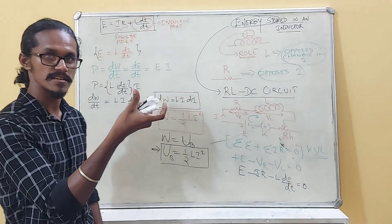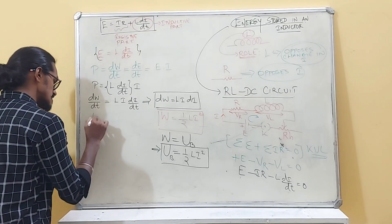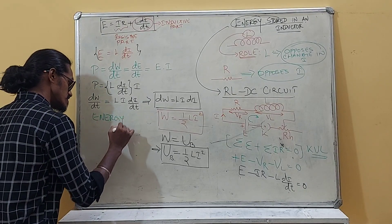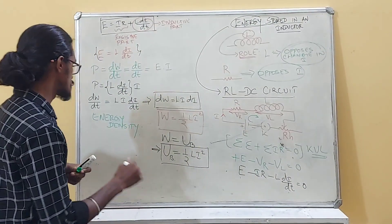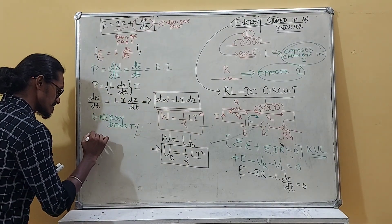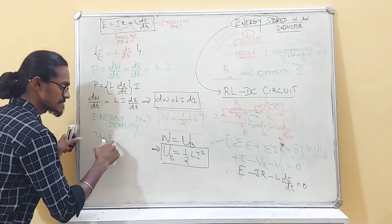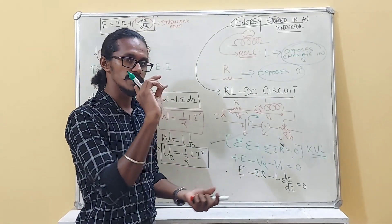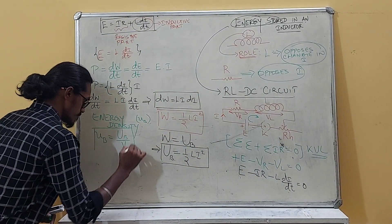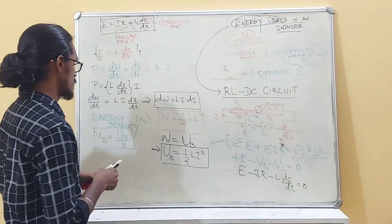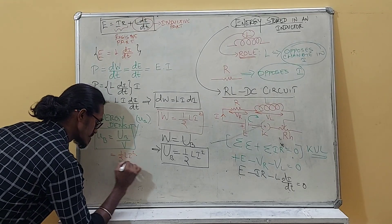We can also calculate the energy density — analogous to mass density. Energy density, denoted small u_B, is defined as the amount of energy stored per unit volume: u_B = U_B / V = ½LI² / V.